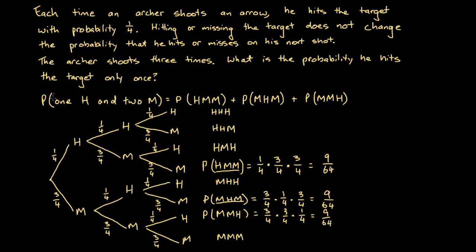What about M M H — miss, miss, hit? The probability is 3/4 times 3/4 times 1/4, which again gives us 9/64. So the probability of getting one hit and two misses equals 9/64 + 9/64 + 9/64. Nine plus nine plus nine is 27, with a common denominator of 64, so the final answer is 27/64.